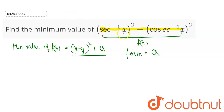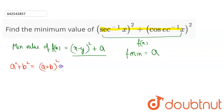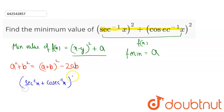So f minimum will be equal to a. Now let us convert this equation into this form using the identity: a squared plus b squared equals a plus b whole squared minus 2ab. So this will be sec inverse x plus cosec inverse x whole squared minus 2 times sec inverse x times cosec inverse x.